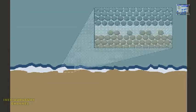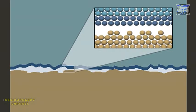Objects made of or coated with a substance like Teflon form few bonds. They usually cause less friction than objects made of a material that forms many bonds, such as rubber or wood.